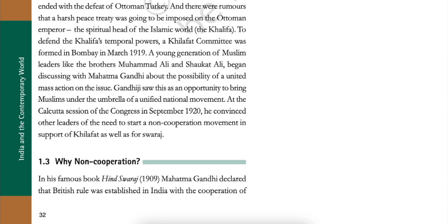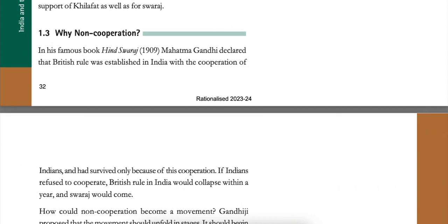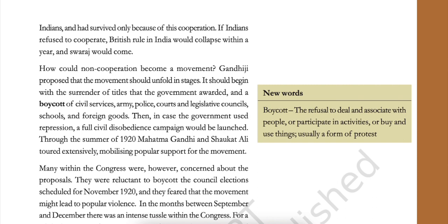To defend the Khalifa's temporal powers, a Khilafat committee was formed in Bombay in March 1919. Young Muslim leaders like the brothers Muhammad Ali and Shaukat Ali began discussing with Mahatma Gandhi about the possibility of united mass action on the issue. Gandhiji saw this as an opportunity to bring Muslims under the umbrella of a unified national movement. At the Calcutta session of the Congress in September 1920, he convinced other leaders of the need to start a non-cooperation movement in support of Khilafat as well as for Swaraj. In his famous book Hind Swaraj (1909), Mahatma Gandhi declared that British rule was established in India with the cooperation of Indians and had survived only because of this cooperation. If Indians refused to cooperate, British rule in India would collapse within a year and Swaraj would come.